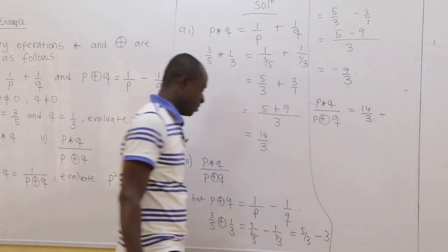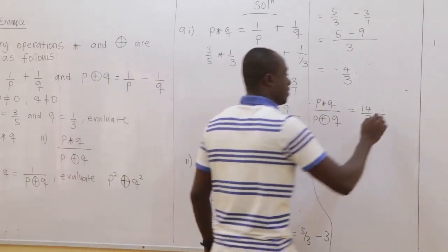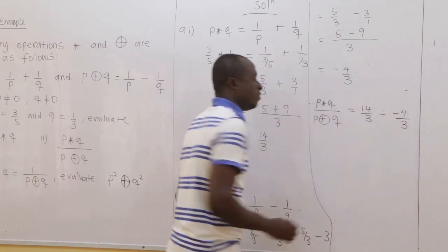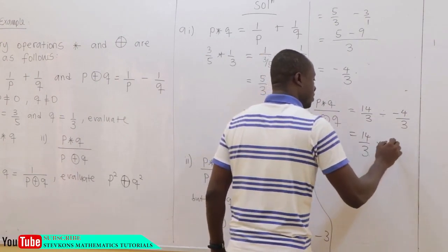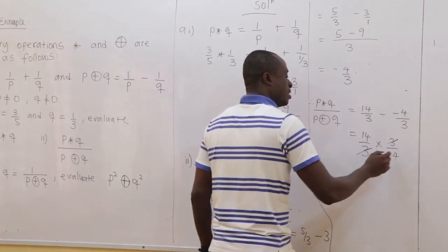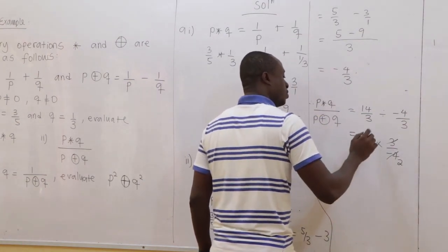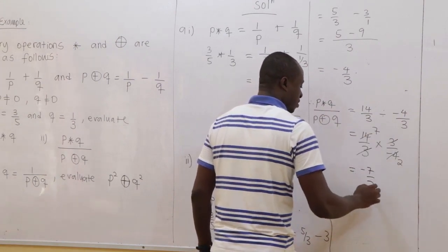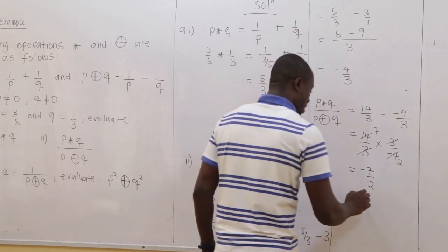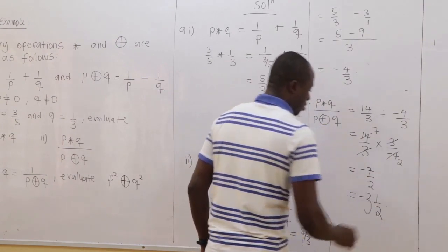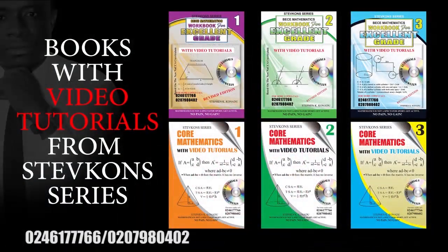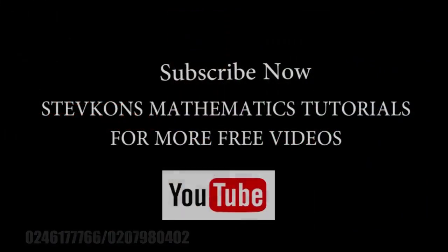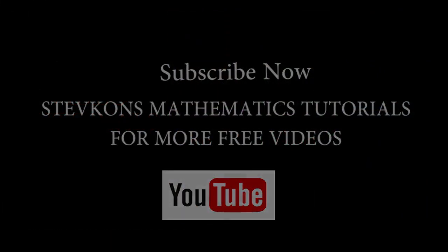Now P⊕K: 1/P − 1/K = 5/3 − 3 = 5/3 − 9/3 = −4/3. So (P★K)/(P⊕K) = (14/3) ÷ (−4/3) = (14/3) × (3/−4) = −14/4 = −7/2.